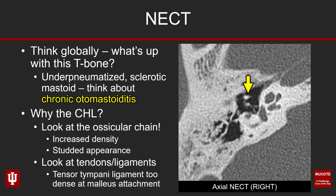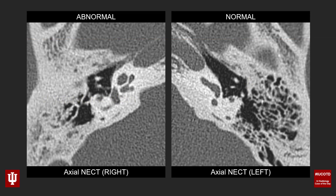Looking at the tendons, we can see where the tensor tympani tendon attaches to the neck of the malleus — that's also too thick and too dense. Don't just take my word for it though; in this case we have a comparison on the contralateral side as an internal control. As we look at our abnormal right side and our normal left side, these findings are in and of themselves a bit subtle, but together they point to a uniform diagnosis.